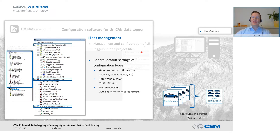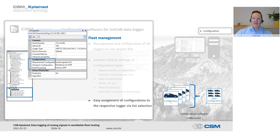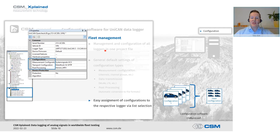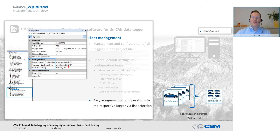We do not do all settings separately for each logger, because in a fleet project many loggers share equal settings — doing it individually would be a huge waste of time. That's why measurement, transport, and post-processing configurations are set up independently from the physical loggers. When it comes to the logger hardware, we simply assign those already existing configurations to a data logger. If we have the same transport configuration for all 20 loggers, we only need to set it up once and then assign it via dropdown menu to all loggers — that's really easy.